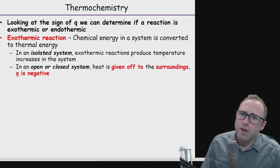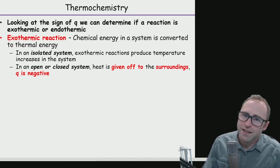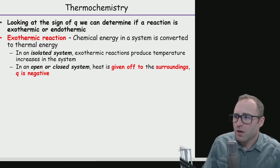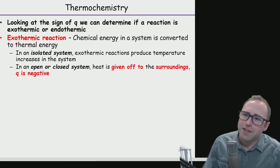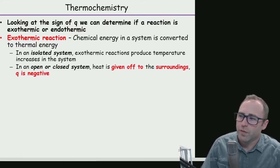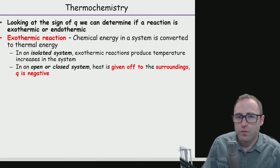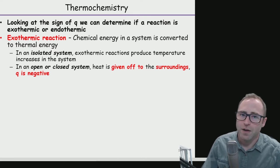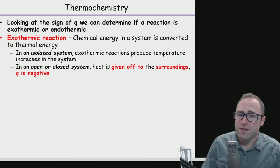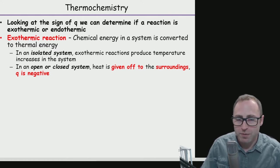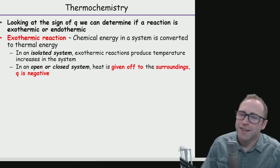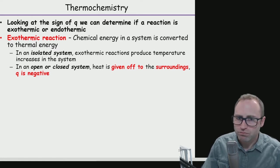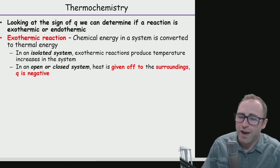When we talked about our system definitions — isolated, open, and closed systems — for an isolated system, that exothermic reaction produces a change in temperature. In an open or closed system, the heat is given off to our surroundings, so Q is negative. In an exothermic reaction in an open or closed system, Q is going to be negative.